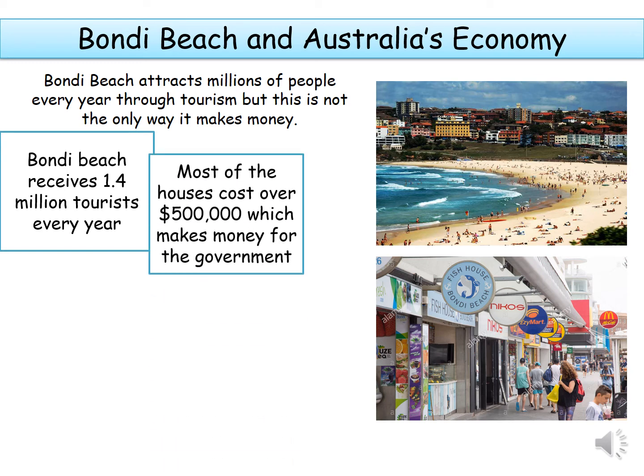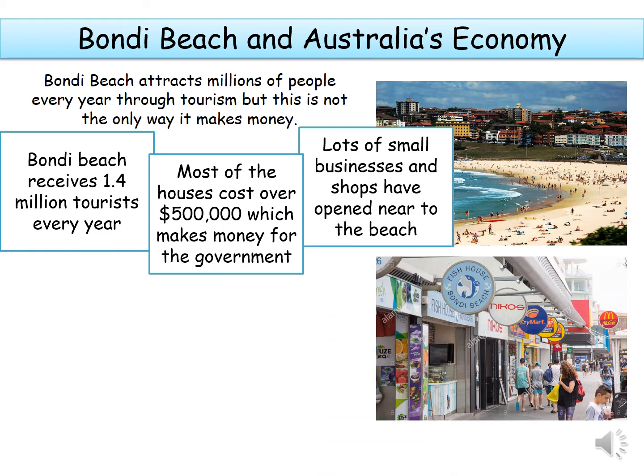Number two: most houses near the beach cost over $500,000 because lots of people want to live there. The more people who want to live in an area, the more expensive those houses get, and that makes money for the government. Finally, lots of small businesses and shops open near the beach to make money from tourists. When those businesses make lots of money, they pay tax, which means Australia's economy gets stronger.